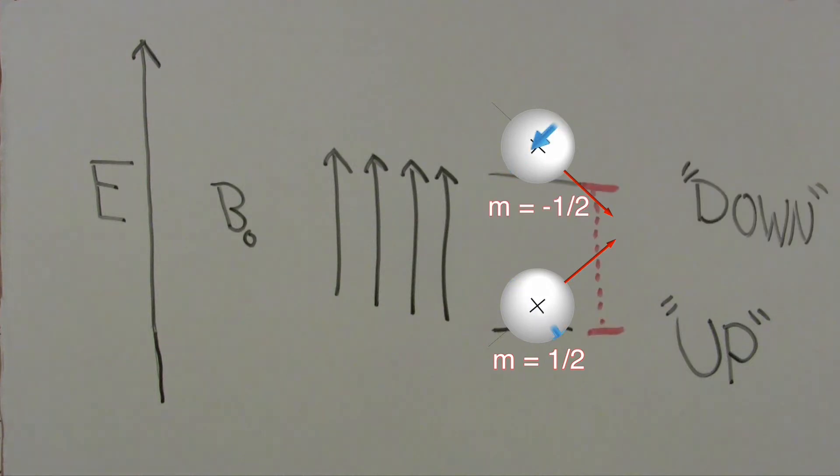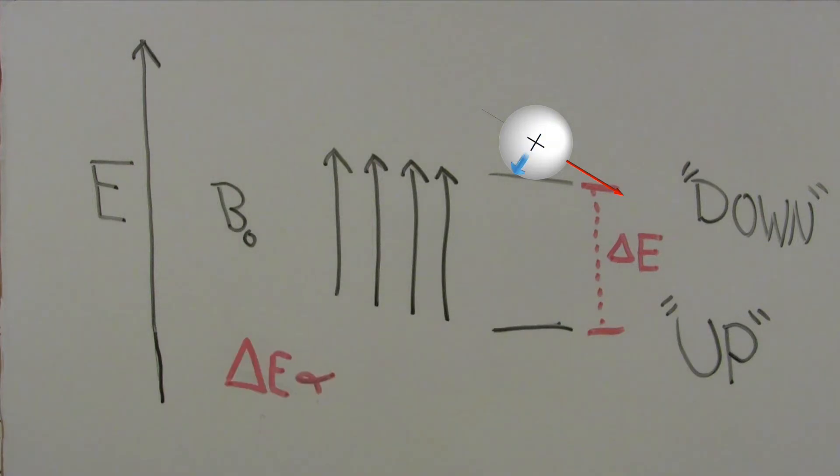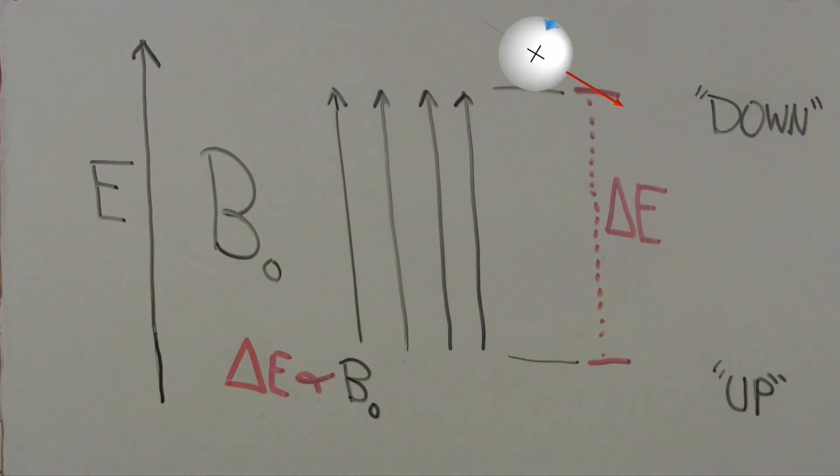The energy between these two states, that is, the energy needed to flip a nucleus from the up spin state to the down spin state, is this height differential. This energy gap is directly proportional to the strength of the magnetic field applied. If you increase the field strength, you increase the energy gap. Intuitively, the interaction between two magnets is stronger if you increase the strength of one of them.